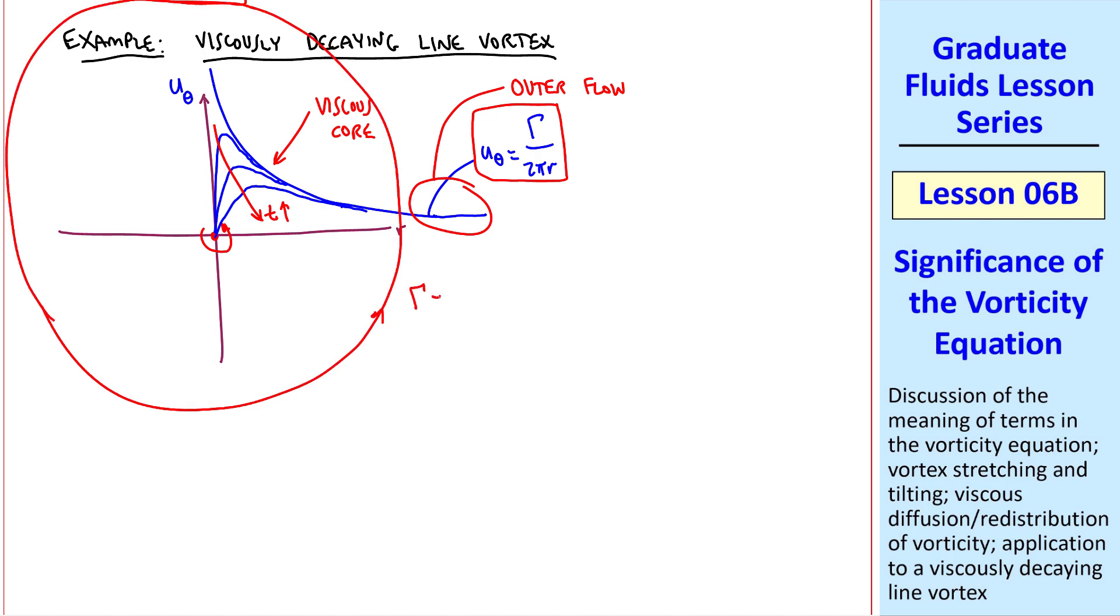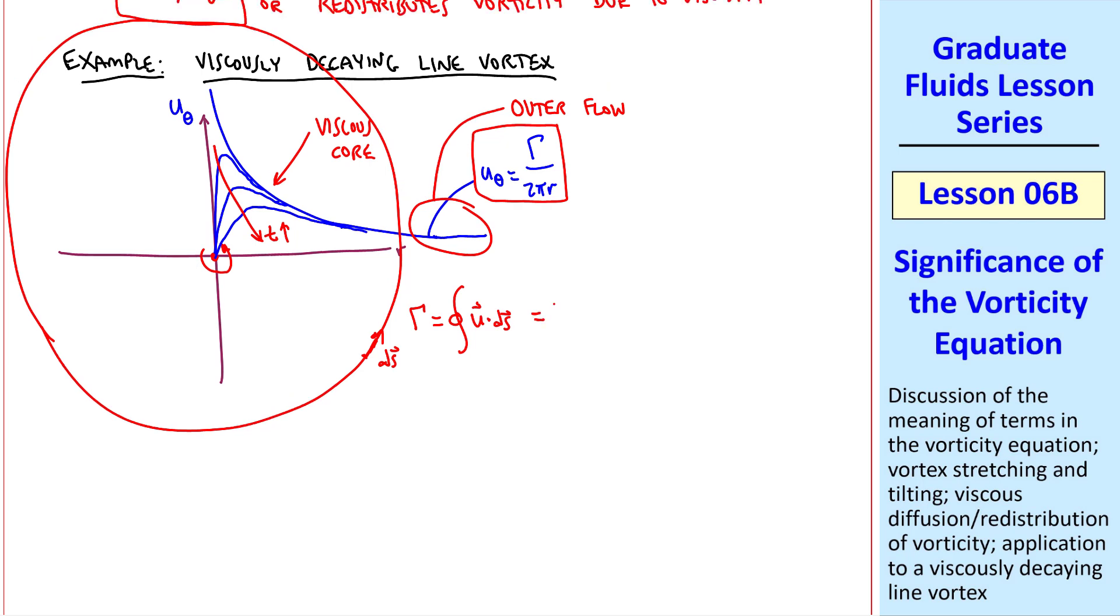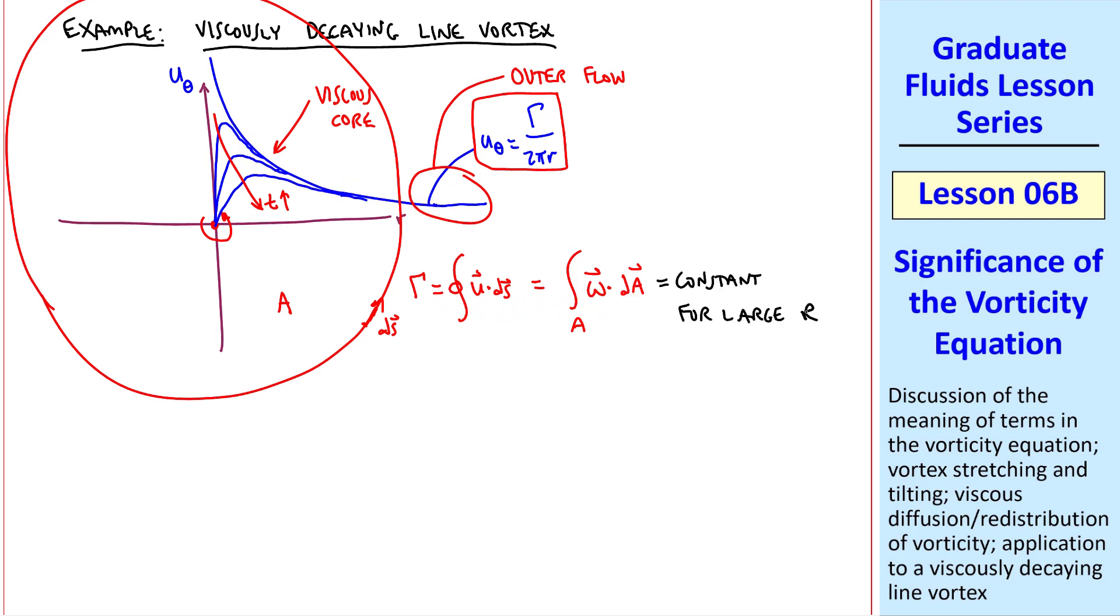If we encircle this flow with a large circle, we can calculate the circulation as the integral over that whole closed circle of u dot ds, where ds is a small line element along the path. And we showed previously that this is also equal to the area integral of omega dot dA, where A is the area inside this contour. Since the entire circle is in the outer flow and hasn't yet experienced the effect of viscosity, gamma remains constant for a large radius r, which is the radius of our circle. Of course, eventually, as time keeps going on, the viscous core will reach our circle.